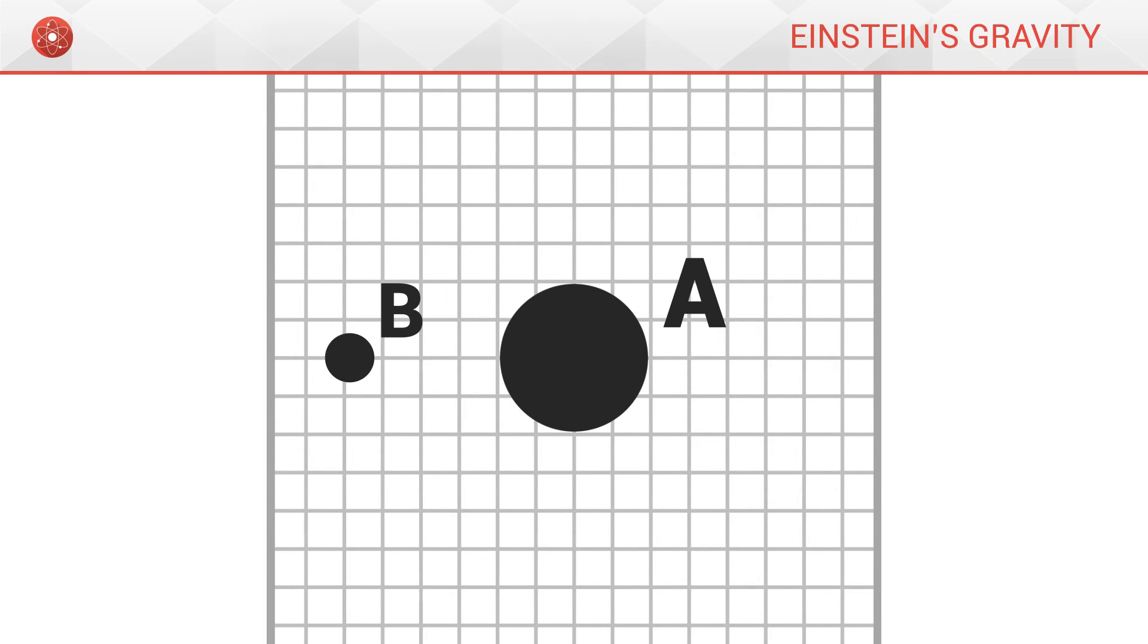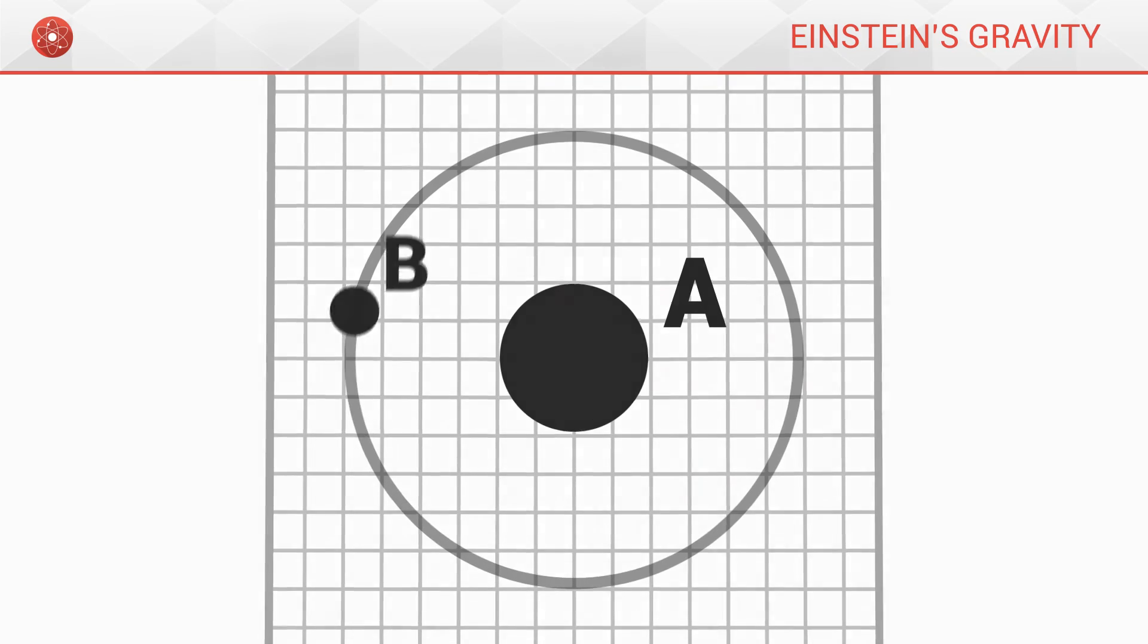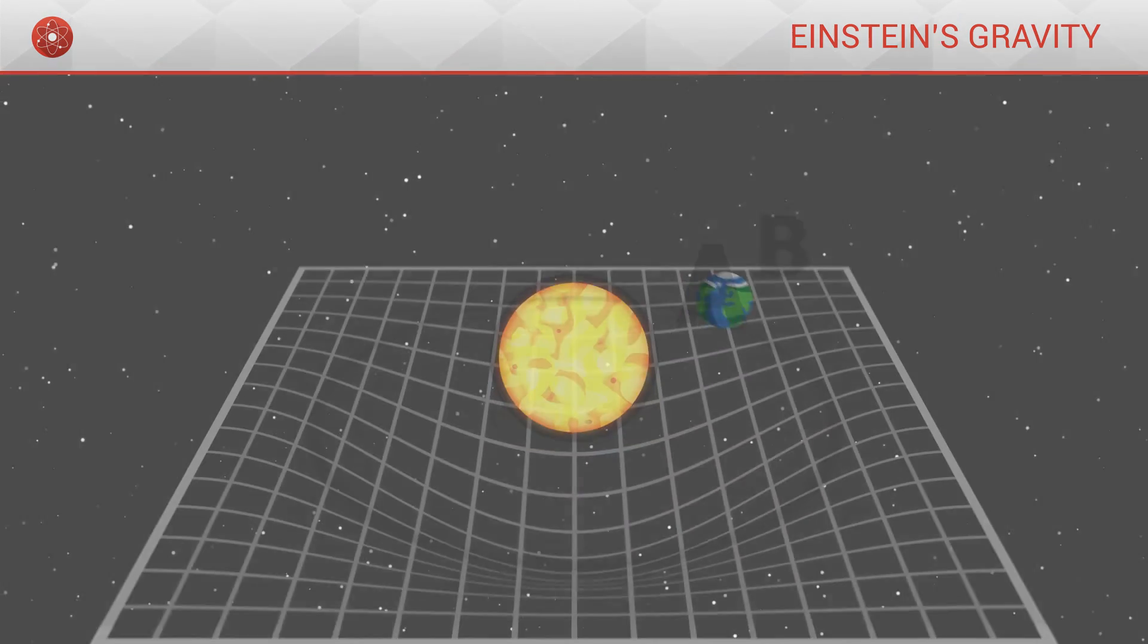Finally, if we could release B with a sufficiently great speed, B would begin to go around A without ever getting closer to it. It is in this way that planets orbit around the Sun.